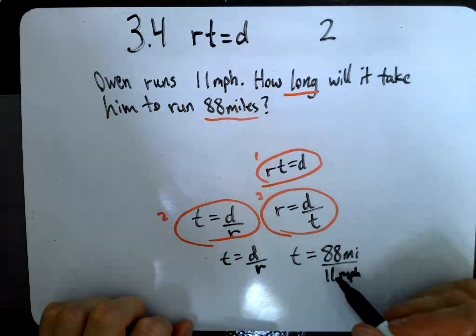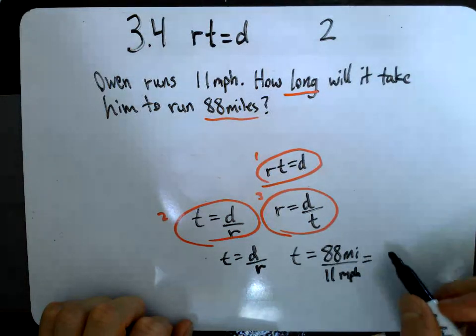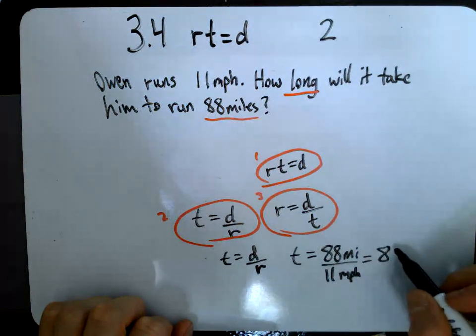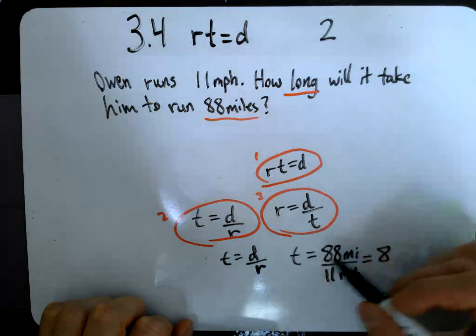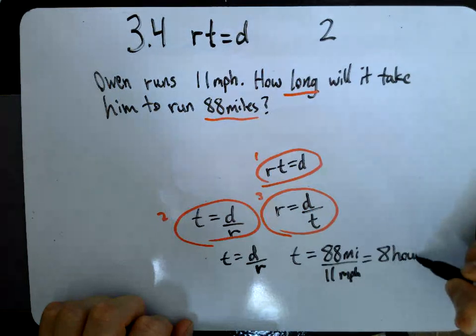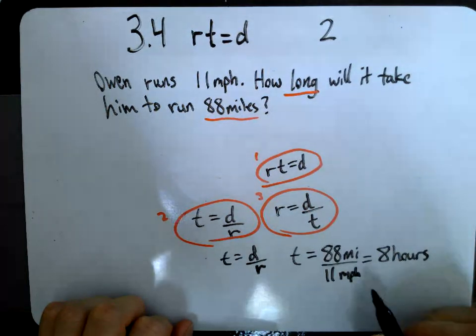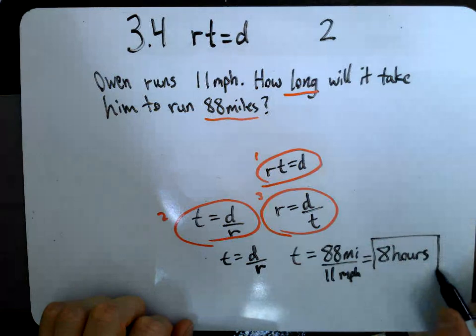And the result of this, 88 divided by 11, as you know, that equals 8. And what's our unit? Well, it's time, right? So 8 hours. And we know that because this was miles per hour. Okay.